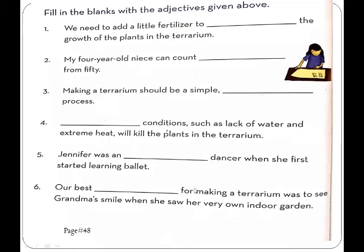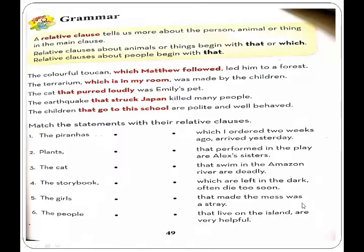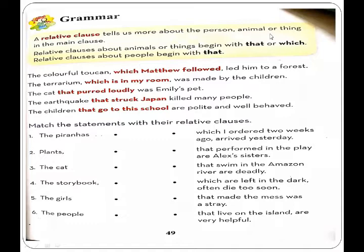I hope you have completed this exercise with me. Now come to page number 49 of your course book. Here we are given the grammar of Unit Number 4 — they are explaining relative clauses. A relative clause tells us more about the person, animal, or thing in the main clause.